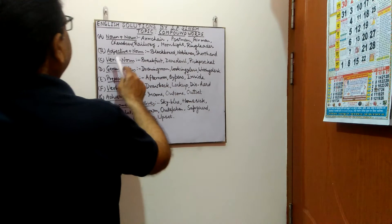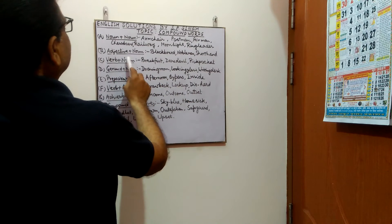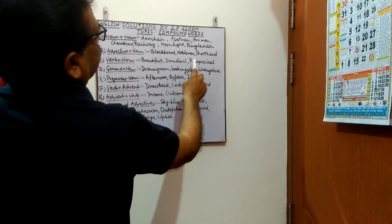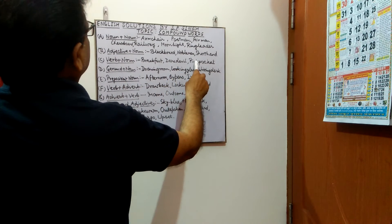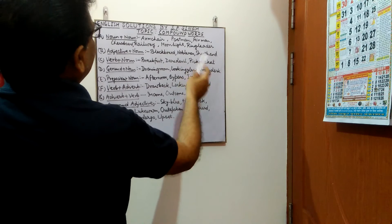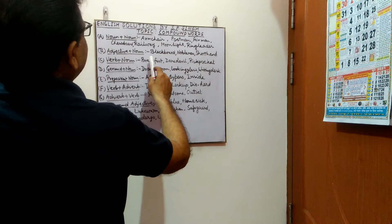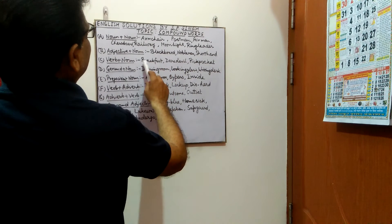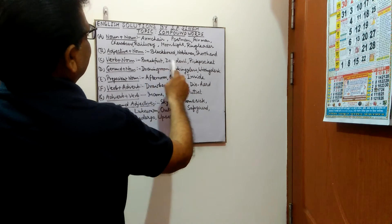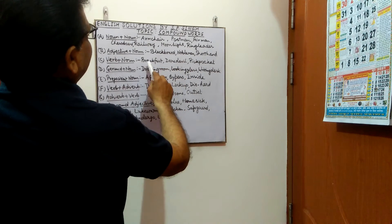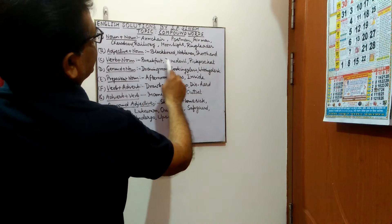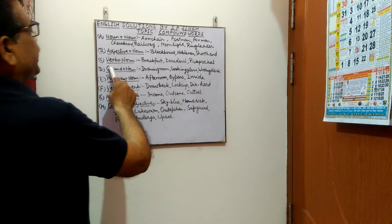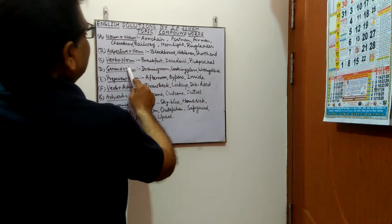The next category is verb plus noun. Examples are breakfast, daredevil, and pickpocket. In the same way you can analyze these words — the verb and noun parts are present in breakfast, daredevil, and pickpocket.